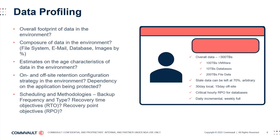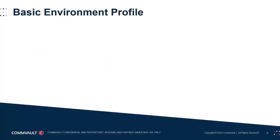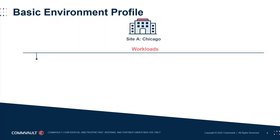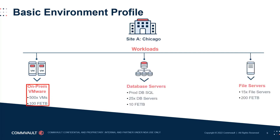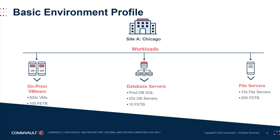Now let's focus on building some basic data profiles. Profiles grow in value with the more data that you can collect. In this example, we have a top-level view where our location, Chicago, has a little over 300 terabytes of data to manage spread out across three different data types: 100 terabytes across 500 virtual machines, 25 SQL database servers consisting of 10 terabytes, and 200 terabytes of file system data. This level of data capture can be useful but really can only be used for calculating licensing for Commvault Complete Data Protection. The more basic the data profile, the more limited the design potential, and the more assumptions your solution architecture will contain. Depending on the stage of your opportunity, this may provide a perfectly acceptable level of solution design initially, with further scope to refine it along the way.